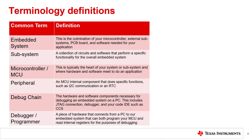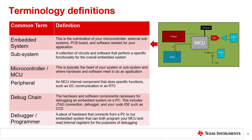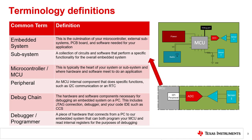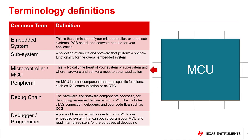Before we get started, let's define some terms that will be used throughout this video and subsequent videos. An embedded system is the culmination of your microcontroller, external subsystems, and software needed for your application. A subsystem is a collection of circuits and software that perform a specific functionality for the overall embedded system. An MCU, or microcontroller, is typically the heart of your system or subsystem and where hardware and software meet to do an application.